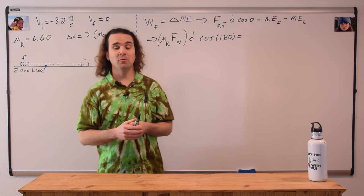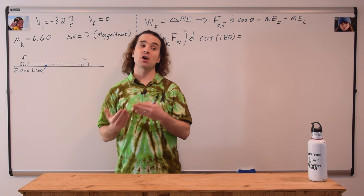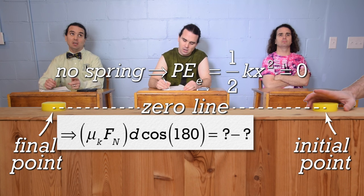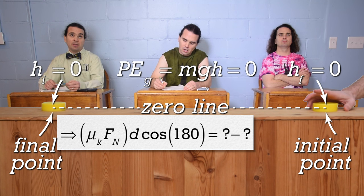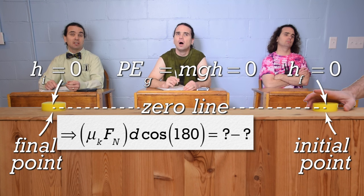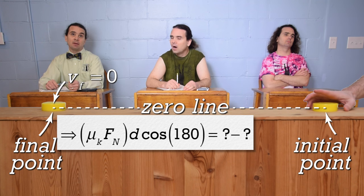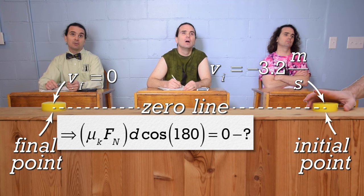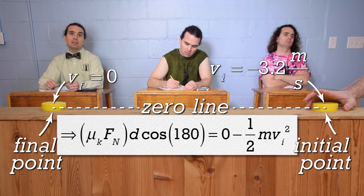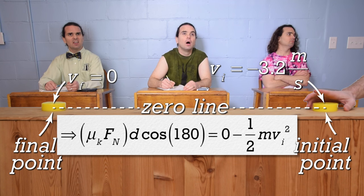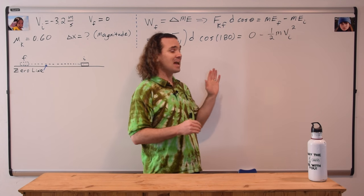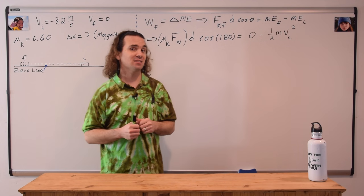Billy, could you please tell me, initially and finally, which energies are there and why? There is no spring, so no elastic potential energy, initial or final. The height of the puck is zero both initially and finally, so there is no gravitational potential energy. The final velocity of the puck is zero, so kinetic energy final is zero. However, the initial velocity is not zero, so the initial kinetic energy is not zero. Therefore, there is zero final mechanical energy and the only initial mechanical energy is kinetic energy — zero minus one-half mass times velocity initial squared.